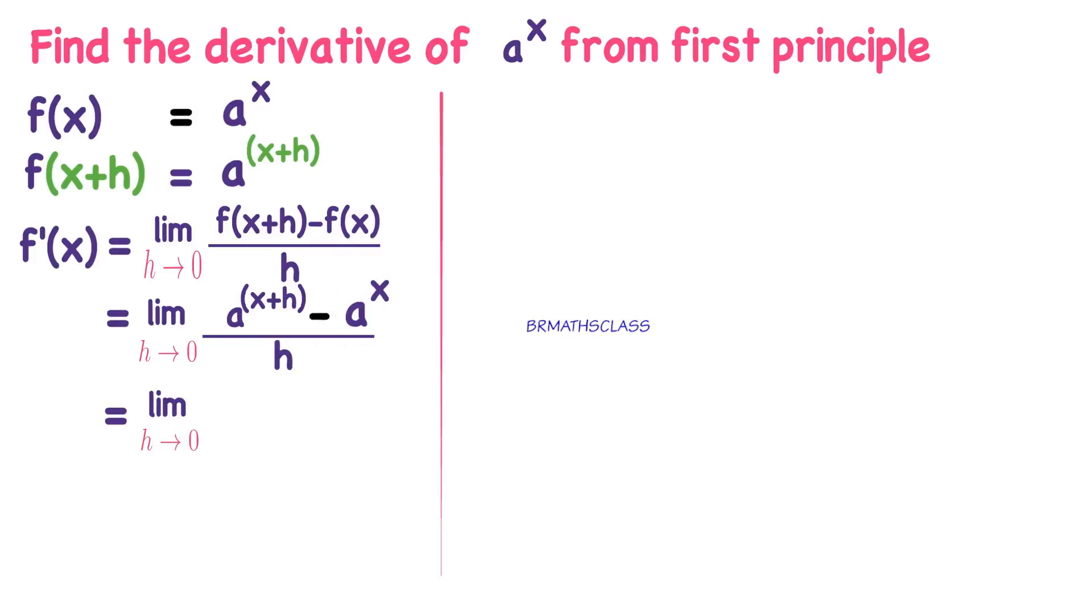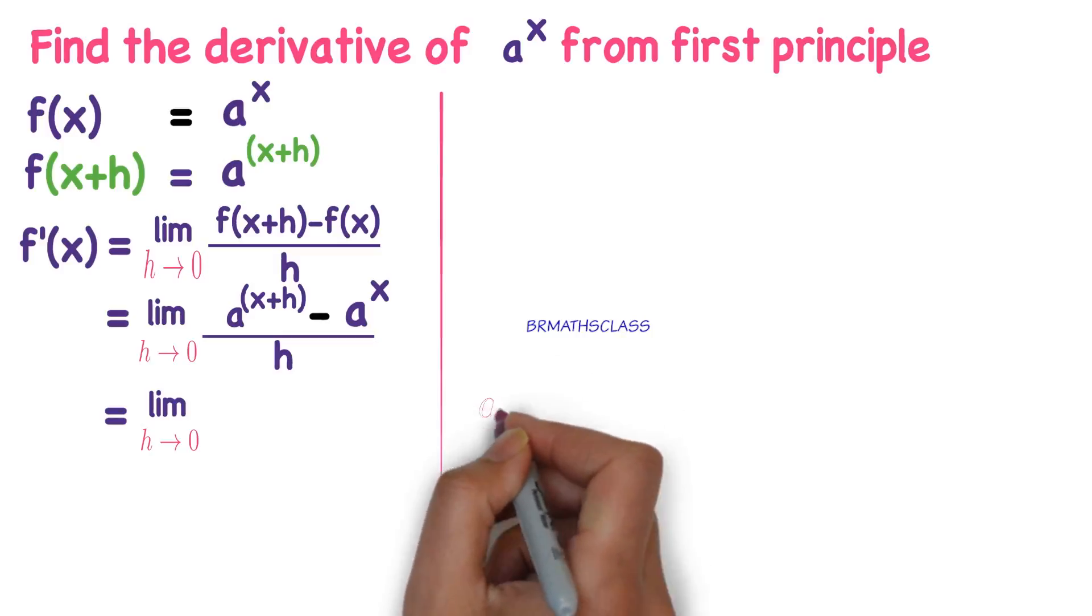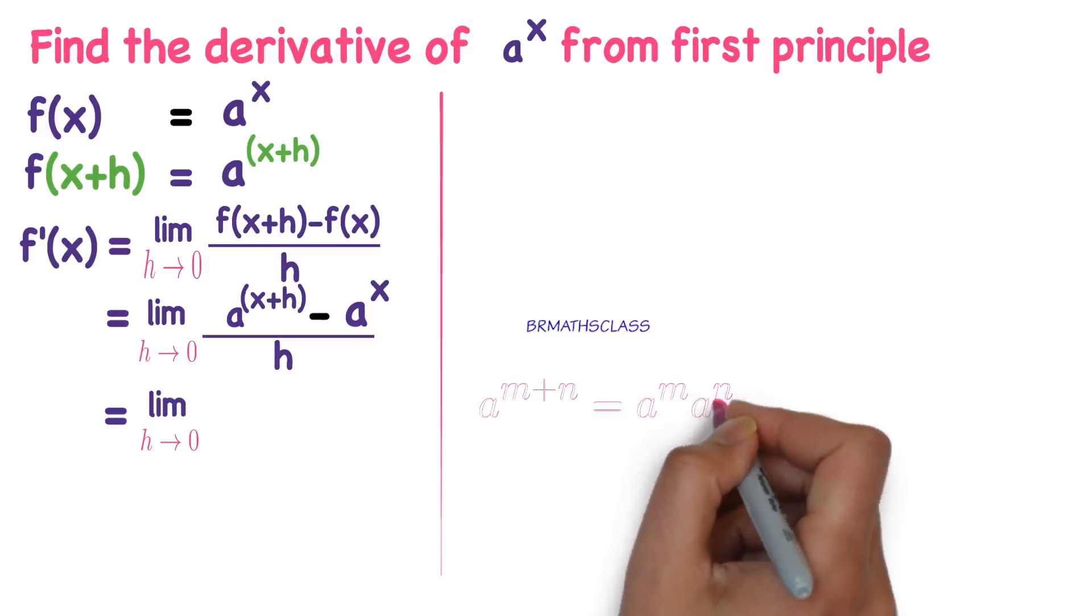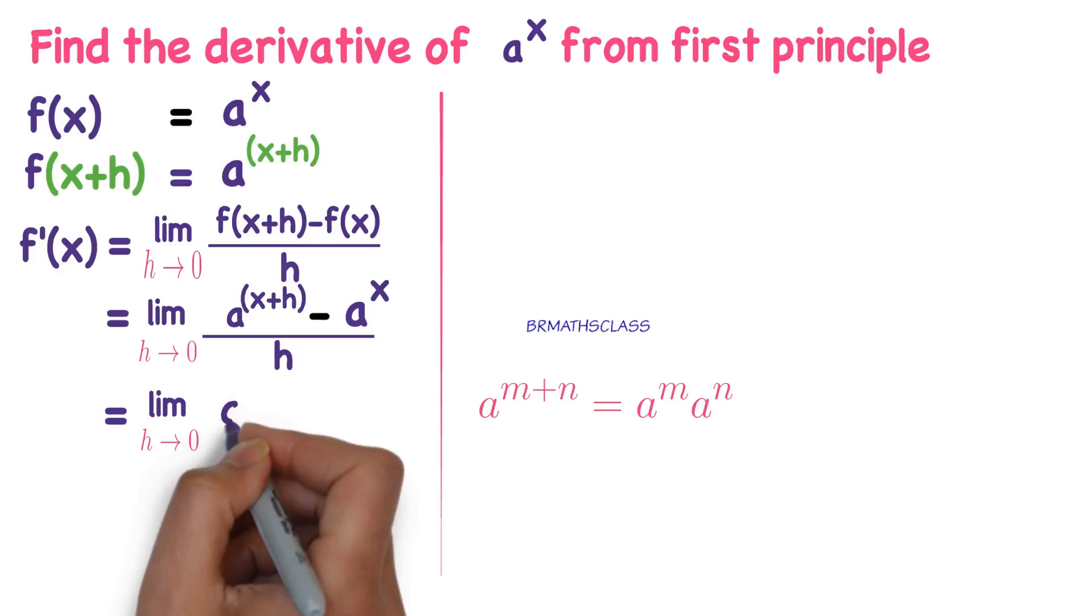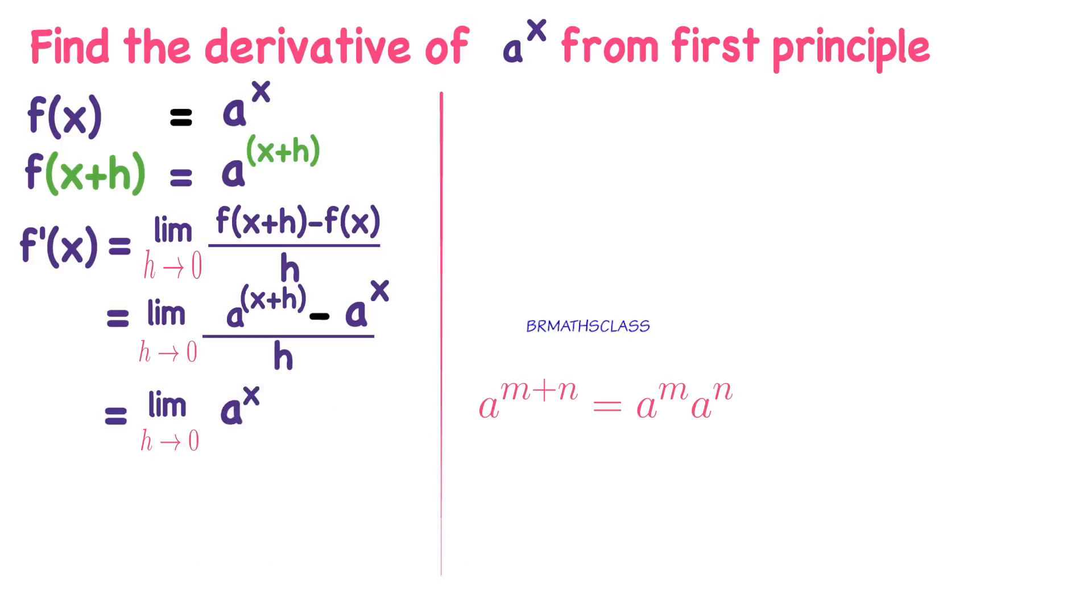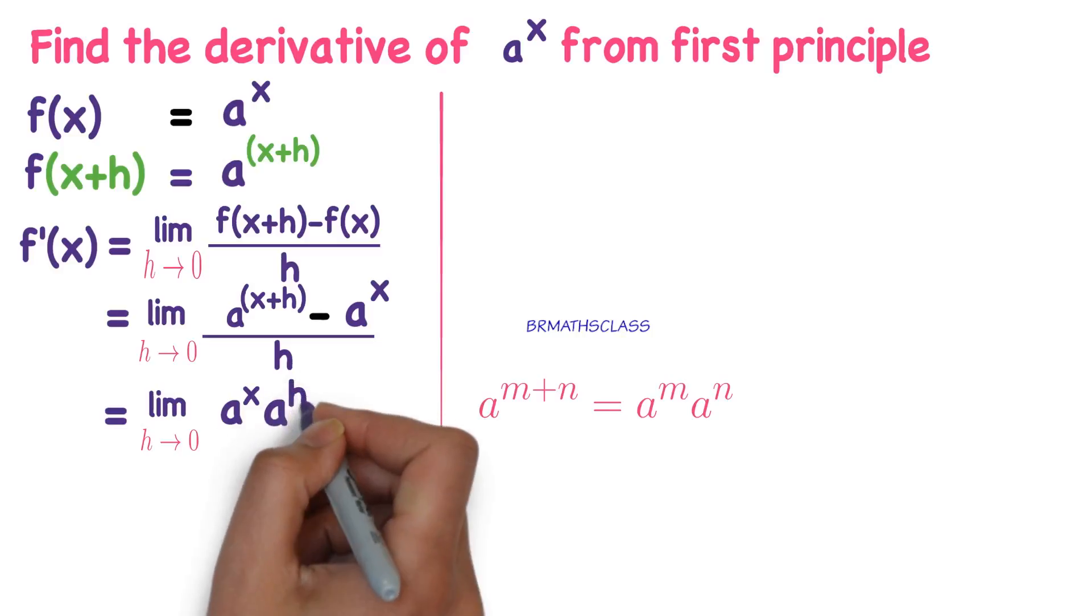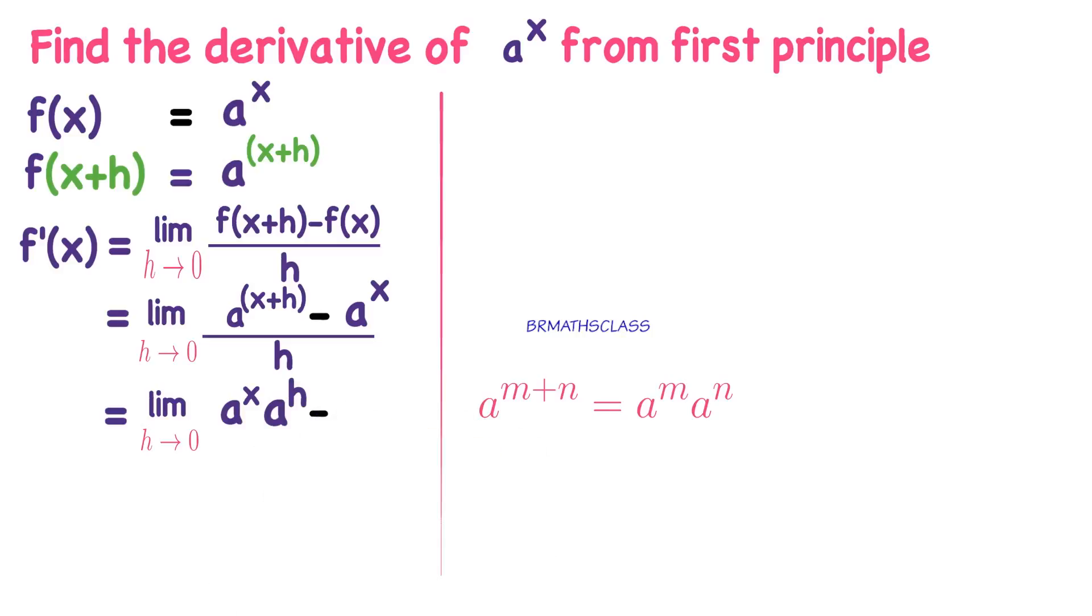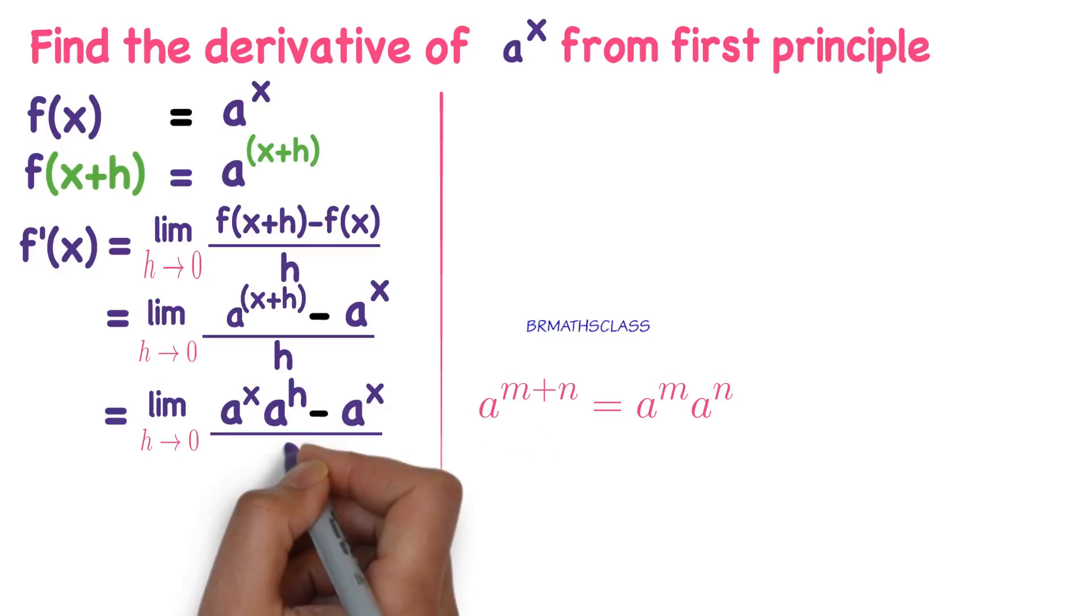Limit h tends to 0. Now we know this formula from 7th standard onwards. a power m plus n equals to a power m into a power n. So a power x plus h can be written as a power x into a power h minus a power x whole divided by h.